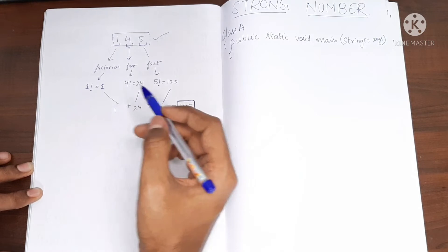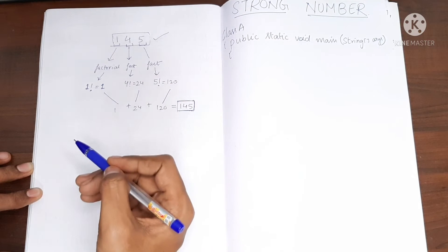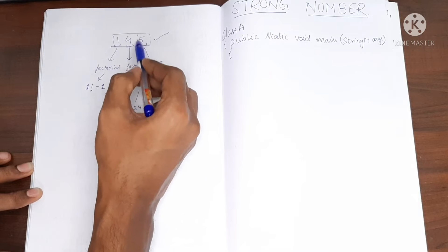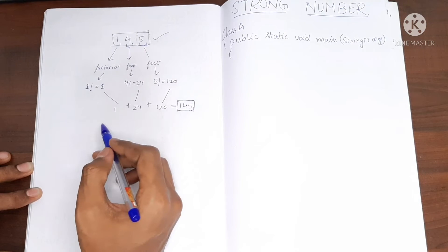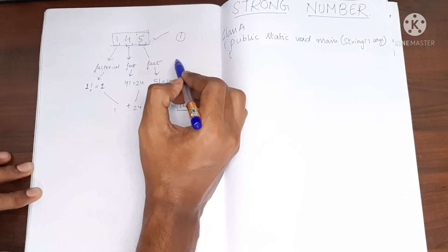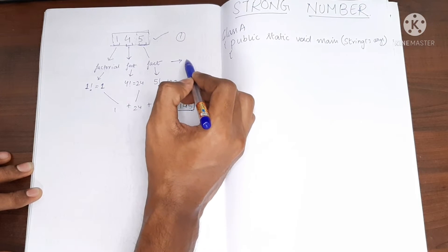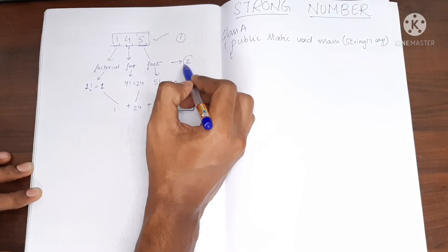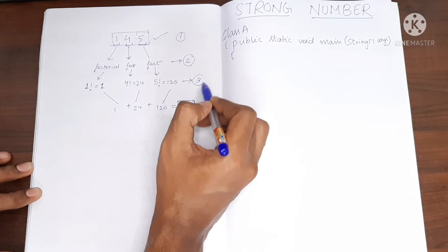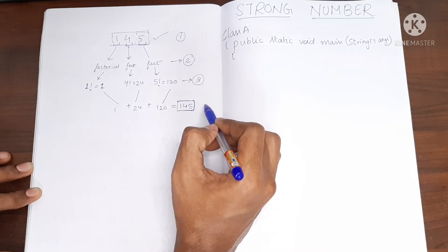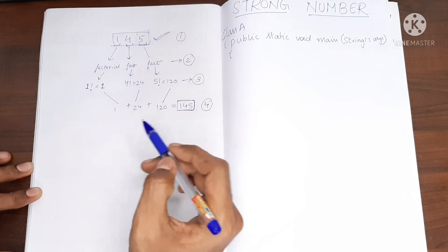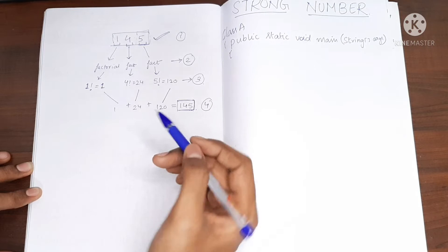Now let's convert this into a program. Our approach has four steps: first, take each digit separately; second, find the factorial of each digit; third, add them up; and finally, compare the sum with the original value.